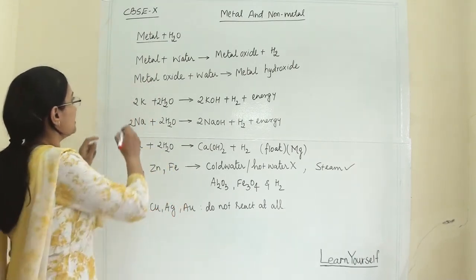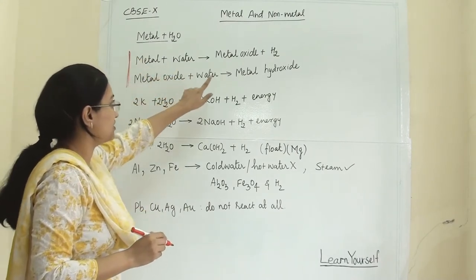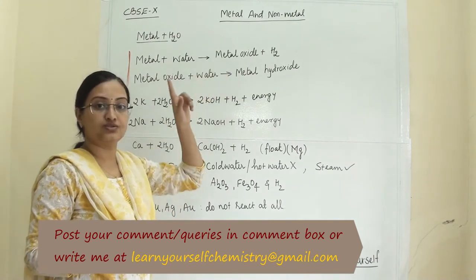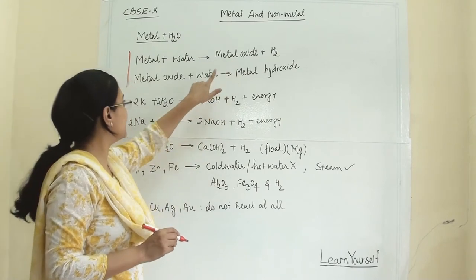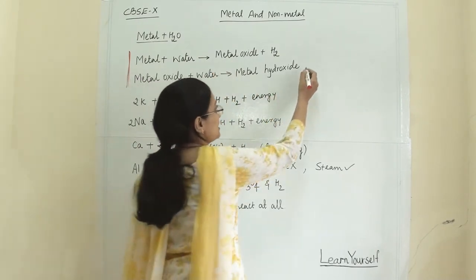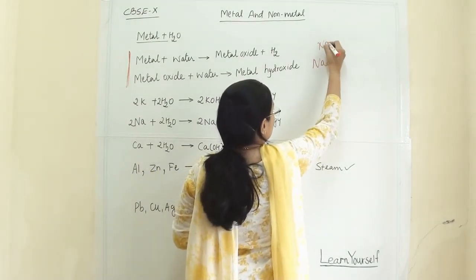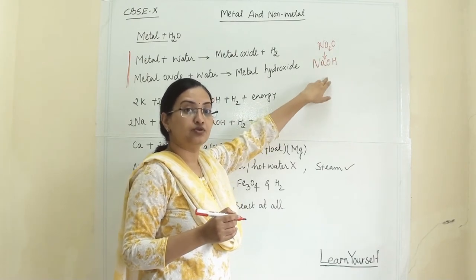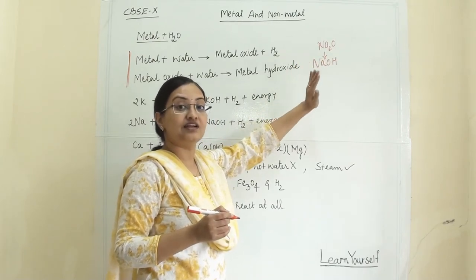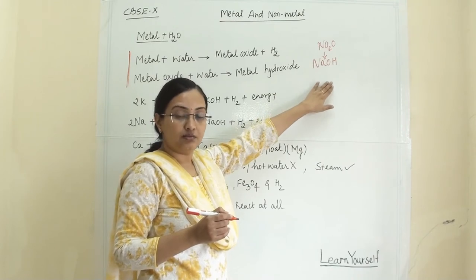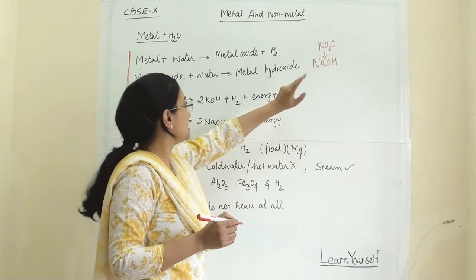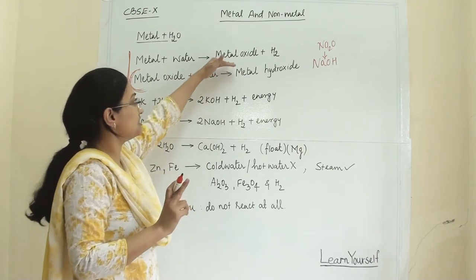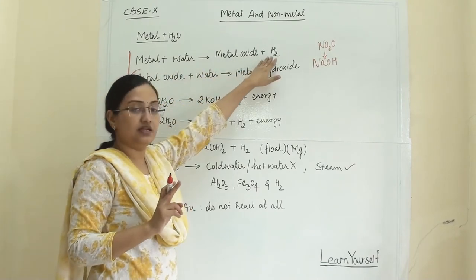As a generalized reaction, when metal reacts with water it will form metal oxide and hydrogen gas. But some metal oxides are soluble in water — in that case they will form metal hydroxide. We have seen this when Na₂O dissolves in water to give sodium hydroxide, and a similar reaction occurs with potassium. Metal oxides that dissolve in water are known as alkaline. This further reaction is only possible if the metal oxide is soluble in water; otherwise the reaction stops at metal oxide and hydrogen.